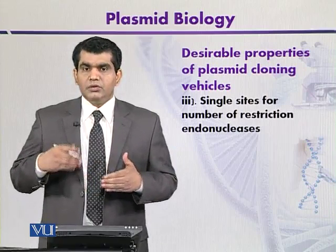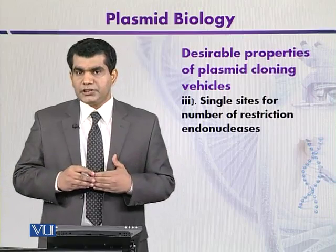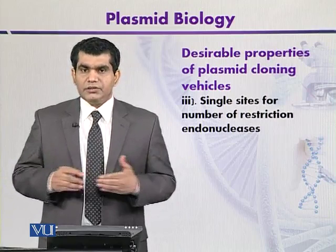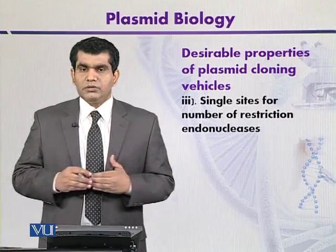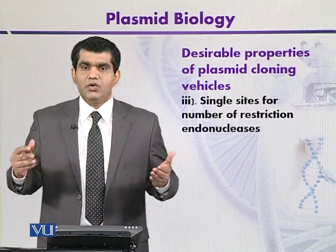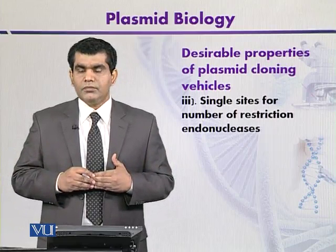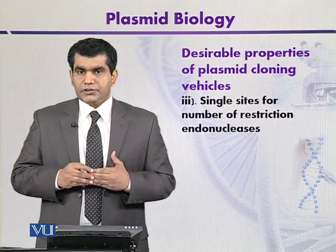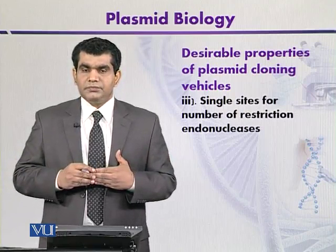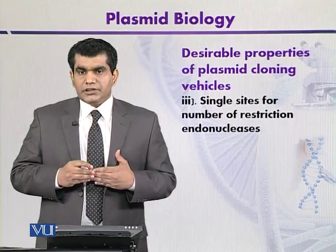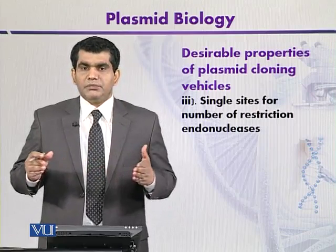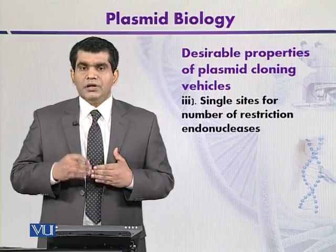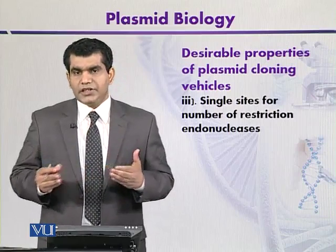Secondly, low molecular weight plasmids are mainly present as high copy number plasmids — the number per cell is high. This means we can clone a number of target DNA sequences by using high copy number plasmids. Finally, if a plasmid is of low molecular weight, there are greater chances that a single restriction site is present for different types of restriction enzymes, since multiple substrate sites will not be available.